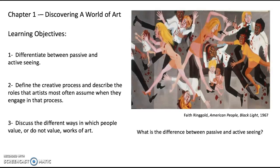We're looking at a piece here by Faith Ringgold, American People, Black Light, from 1967. She's one of the artists discussed in this week's learning unit. If you look at it passively, you just kind of see a bunch of people — there's clearly blood and weapons and a lot of chaos. But if you really start to inspect it, it's almost like similar-looking people, and those people are made smaller to look like children. If you start to analyze the piece, you see that there are a lot of visual metaphors happening, and it's important to think about how we navigate the concept of actively seeing, especially when looking at something this intense.